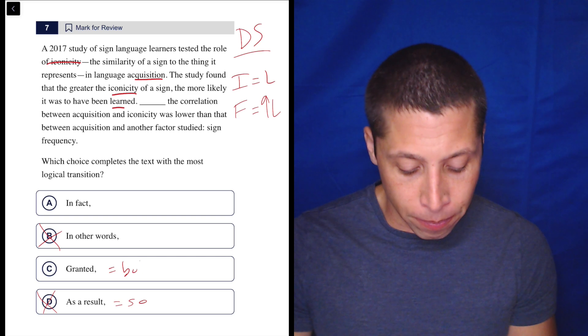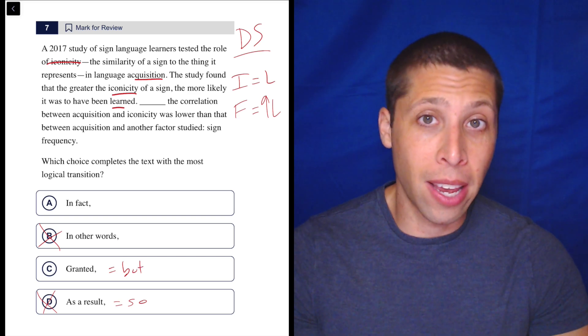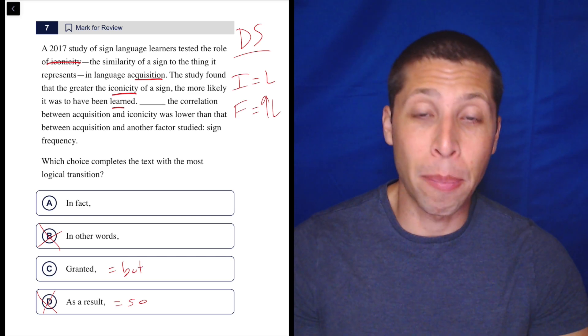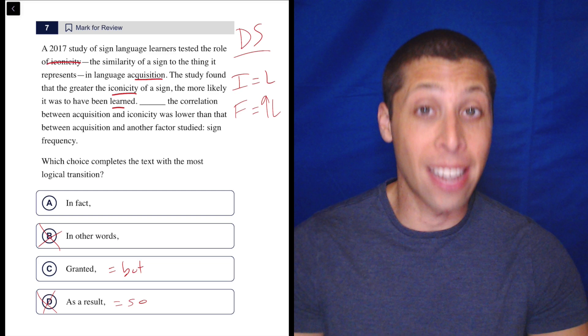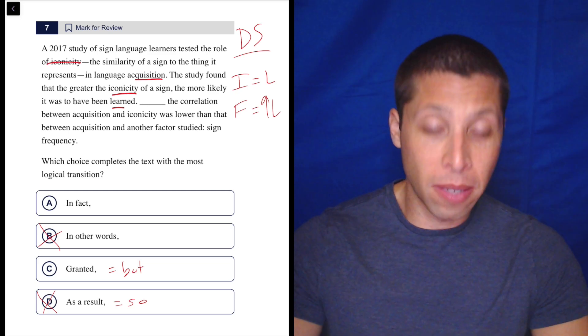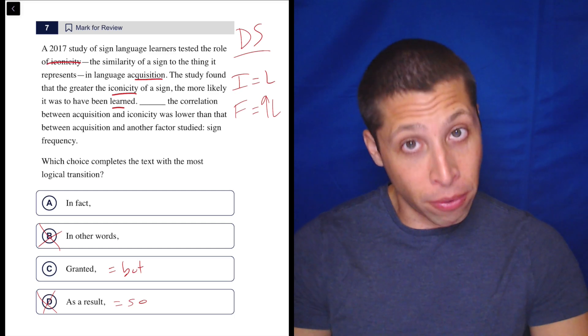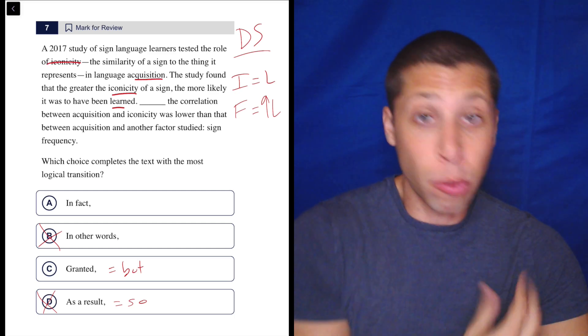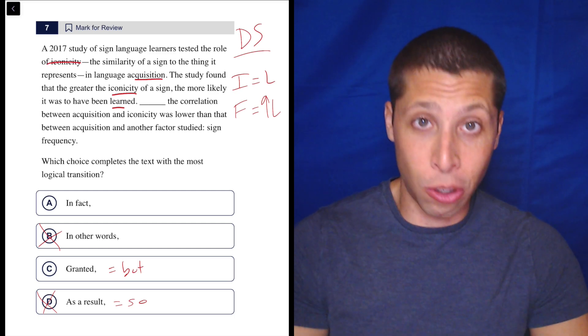It basically means but. So it's a way of saying that the thing we just said might not be completely true or might not be the entire truth. And so that's perfect here. They found that iconicity was important. However, but something else was more important. It's a clear situation.